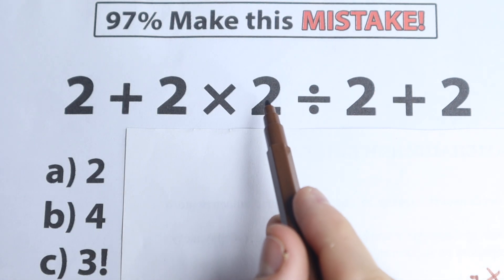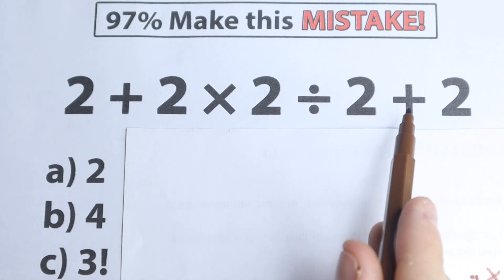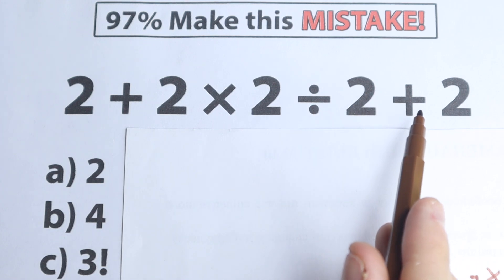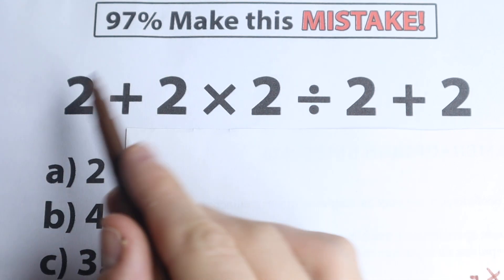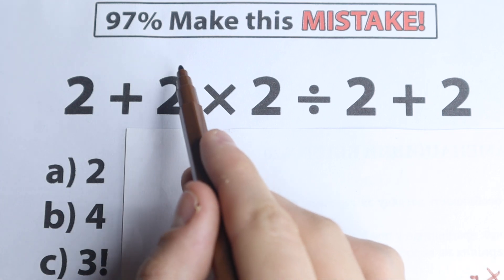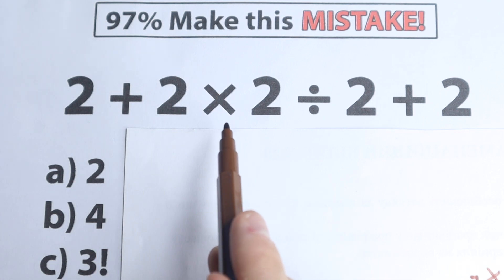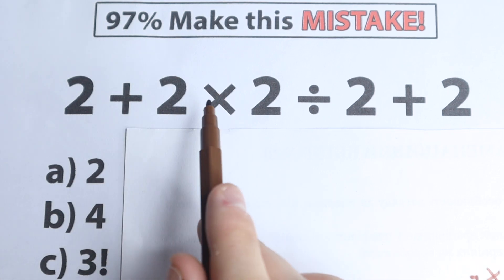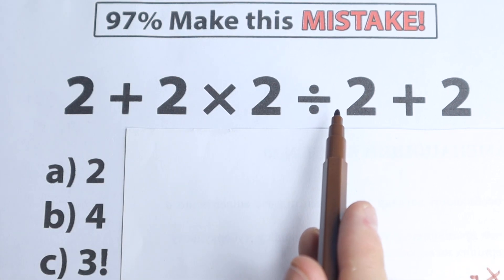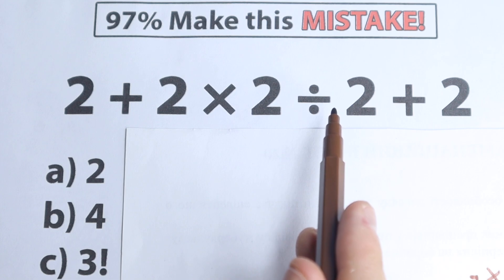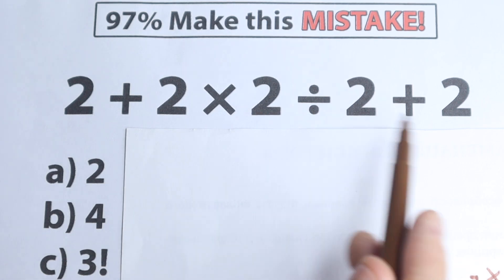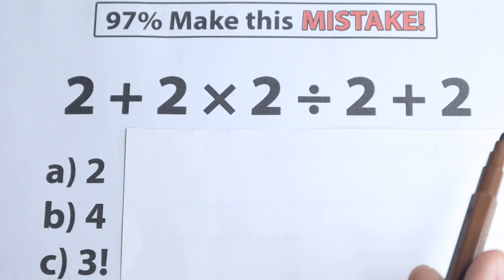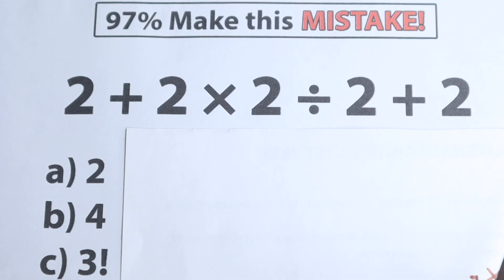We have 2 plus 2 times 2 divided by 2 and plus 2. On the surface this looks like a very easy question — we don't have any parentheses or exponents, we have only addition, multiplication, and division. Everyone learned this stuff in 3rd grade, everyone knows about these math operations.